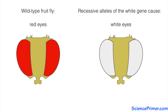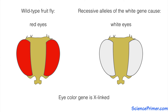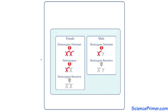If the white gene were on an autosome, it would exhibit classical Mendelian inheritance patterns. However, the gene is on the X chromosome, making it an excellent illustration of sex-linked inheritance patterns. Since control of eye color is encoded by a gene on the X chromosome, females carry two copies and males carry only one.